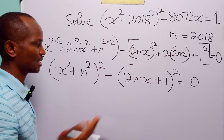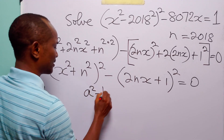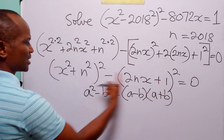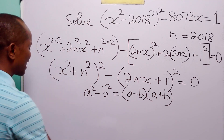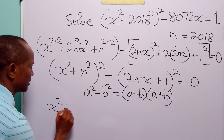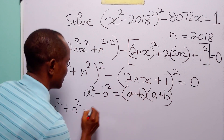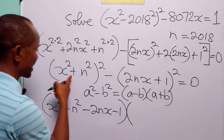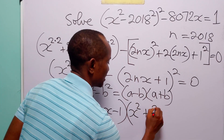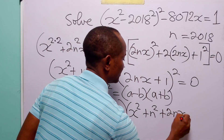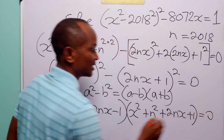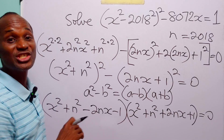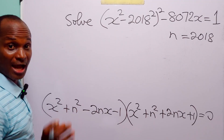Everything is still equal to zero, and most importantly we now have the difference of two squares. Remember that a² − b² = (a − b)(a + b). So we factorize: (x² + n² − 2nx − 1) multiplied by (x² + n² + 2nx + 1) equals zero. We have successfully factorized the original equation.